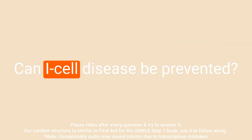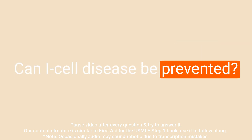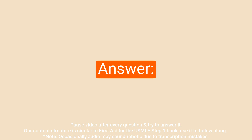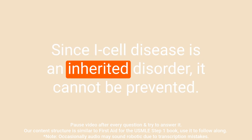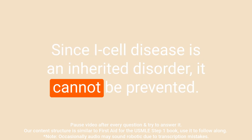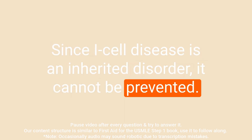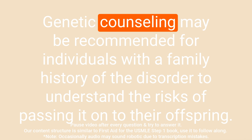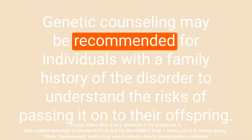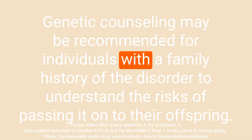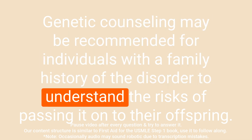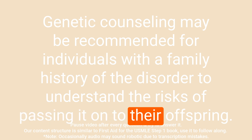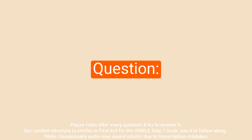Question: Can I cell disease be prevented? Answer: Since I cell disease is an inherited disorder, it cannot be prevented. Genetic counseling may be recommended for individuals with a family history of the disorder to understand the risks of passing it on to their offspring.